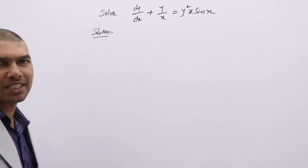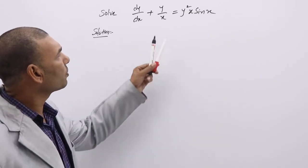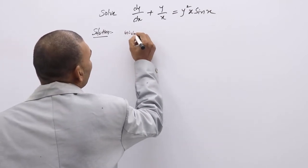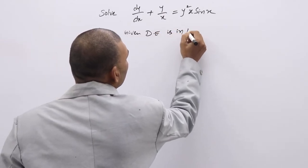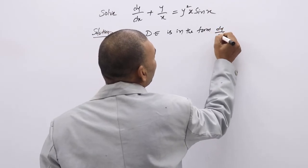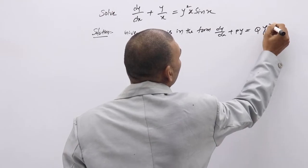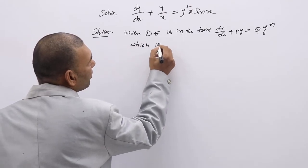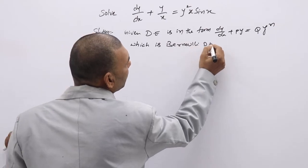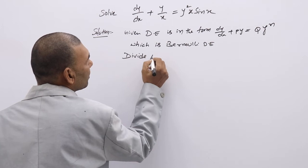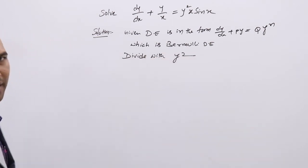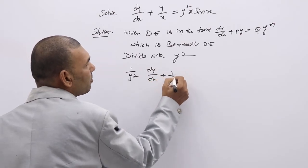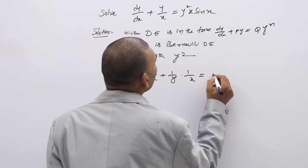Example 2: Solve dy/dx plus y/x equal to y²·x·sin x. Observing y terms on the RHS, this is a Bernoulli DE in the form dy/dx plus Py equal to Qy^N. Divide by y squared: (1/y²)(dy/dx) plus (1/y)·(1/x) equal to x·sin x.